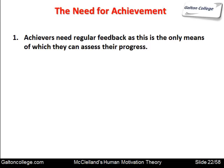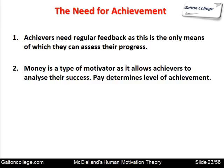Achievers need regular feedback, as it's the only means by which they can assess their progress. They like to be told how well they're doing, what issues they're confronting, and how to solve them. They like discussing their work. Money is a type of motivator as it allows achievers to analyse their success — salary or bonuses linked to achievement mean the more they achieve, the more they get.